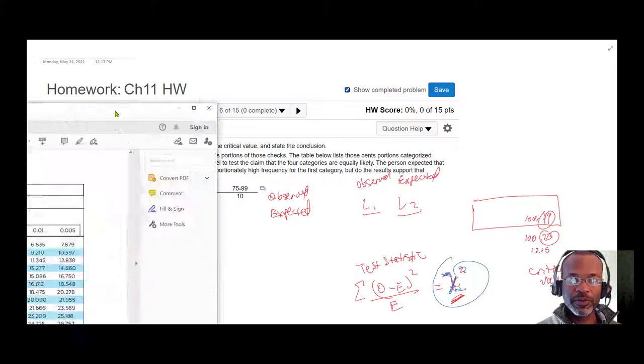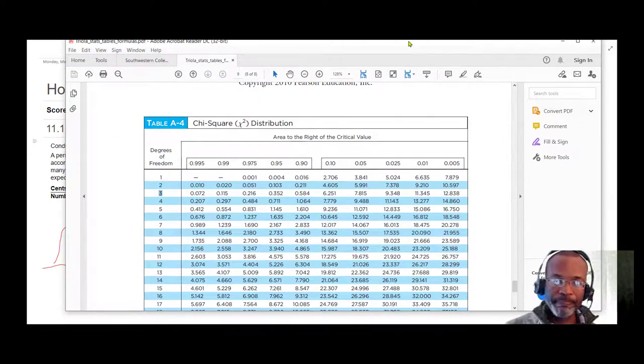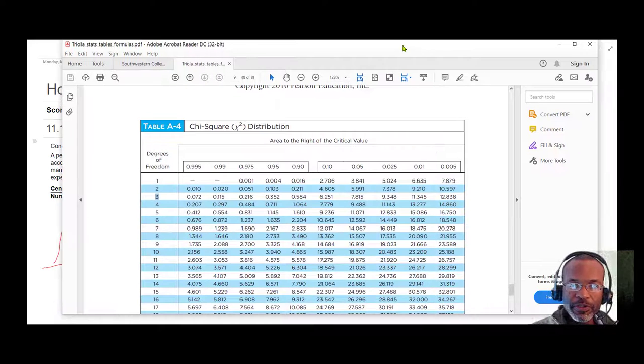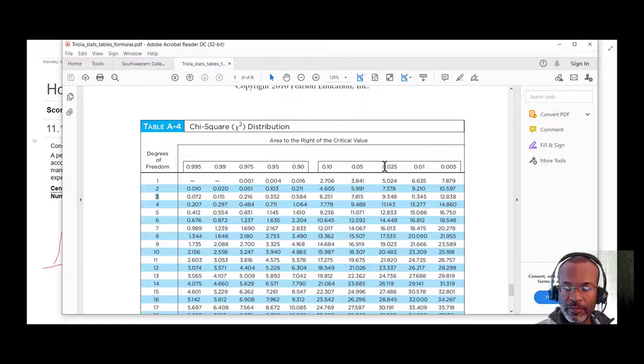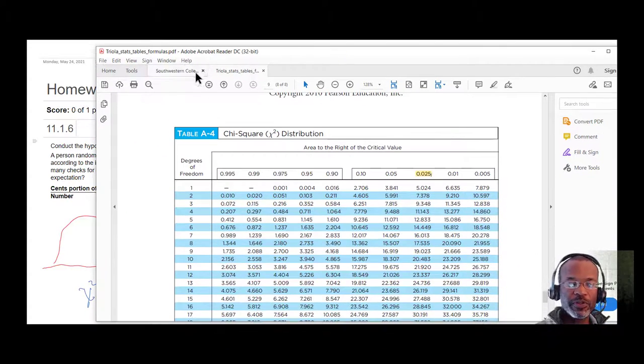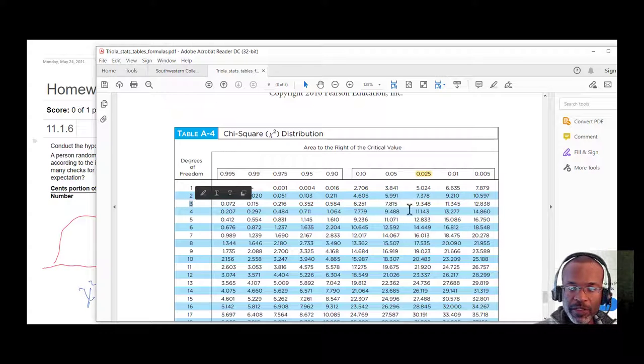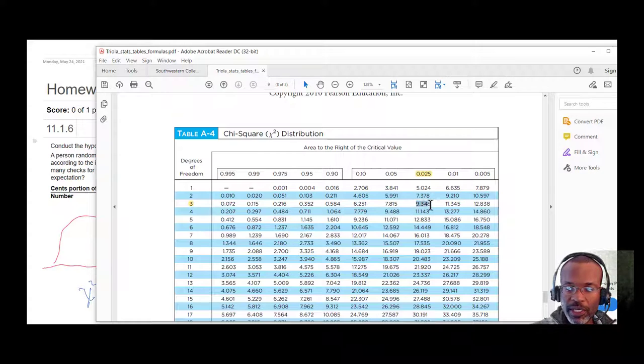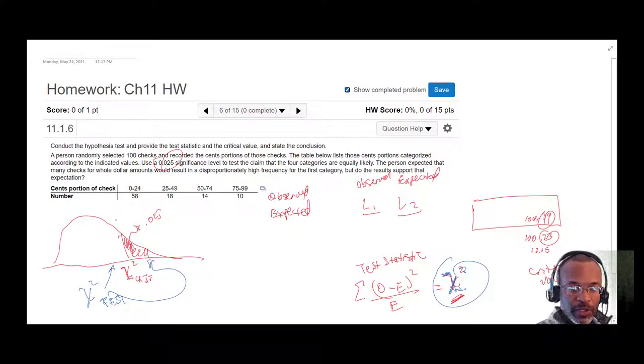So let's go ahead and get the critical value. The alpha is 0.025, and then we also have how many different categories: one, two, three, four—four different categories. So the degrees of freedom will be three, right? Four minus one. And where those two intersect—if we go down this column and across this row—we have a critical value of 9.348.